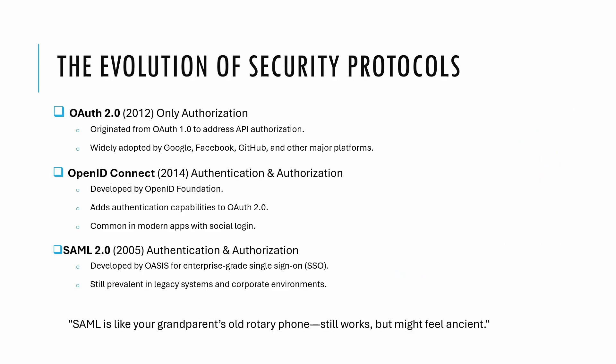Now let's travel back in time and see how these protocols came to be. OAuth 2.0 was introduced in 2012 and was primarily designed to simplify secure access delegation. It allows applications to access resources on your behalf without needing your password — for example, giving a third-party app access to your Google Drive to upload files without sharing your Google credentials.